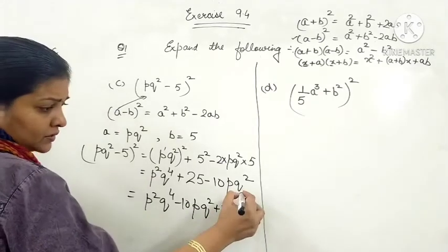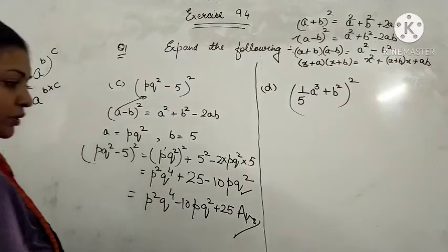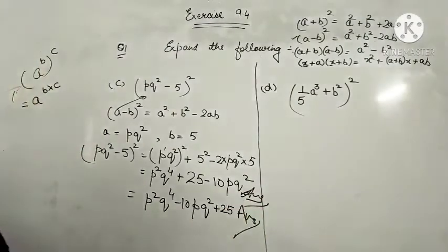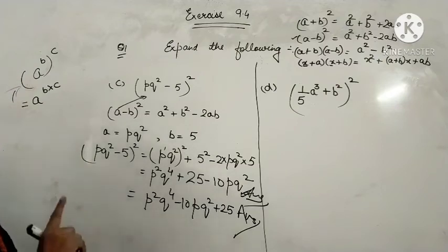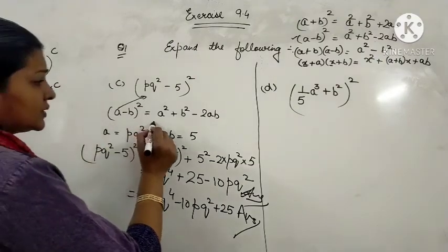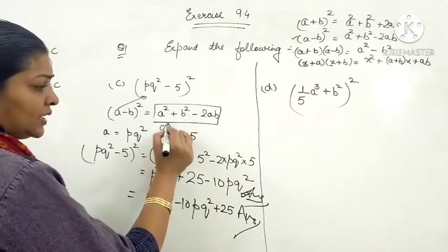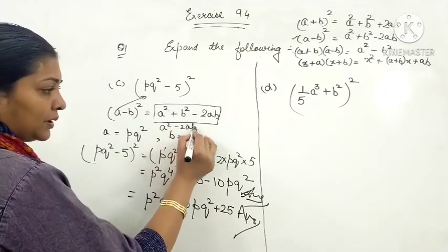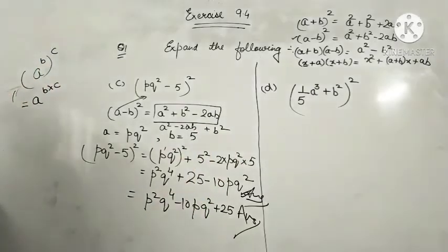No marks will be deducted if you leave the answer at that step, because it is also correct. I am just telling you so you can match your answers from the book. Sometimes people use the formula as A squared minus 2AB plus B squared — both arrangements are correct.